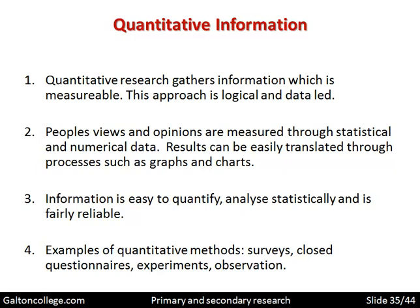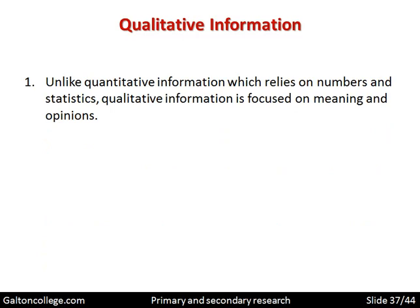Quantitative data can also be based on observation by looking at it and taking measurements with a stopwatch, for example. Unlike quantitative information, which relies on numbers and statistics, qualitative information is focused on meaning and opinions. This means it's a lot more vague. It's looking at the meanings of certain issues and the opinions of people about certain issues — it can't be measured in the same way. It captures the strength of feelings, which people try to pick up through tools like attitudinal scales.